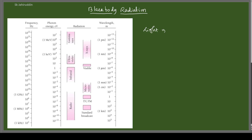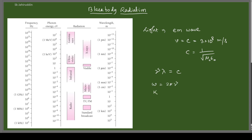From electromagnetic theory we know light is an electromagnetic wave whose velocity c is 3×10⁸ meters per second, and c equals 1 over √(μ₀ε₀). From basic wave theory, light has a frequency and a wavelength related by νλ = c. We also define two quantities: ω = 2πν and k = 2π/λ. That is light as a classical EM wave.